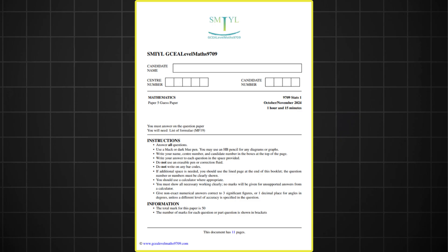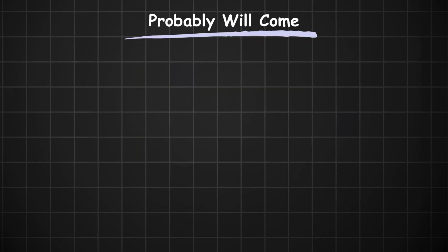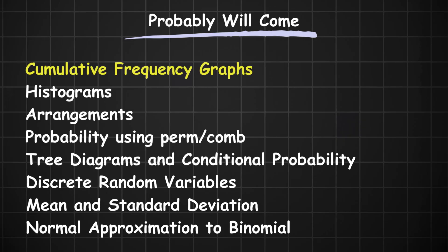Now before I tell you how to access the guest paper, I want to list some of the questions that I think you should give extra focus to, given that they have a very high likelihood of coming. So the list is as follows: cumulative frequency graphs, histograms, arrangements, probability using permutations or combinations, tree diagrams and conditional probability, the whole of discrete random variables, the find the mean and standard deviation question, and the normal approximation question.